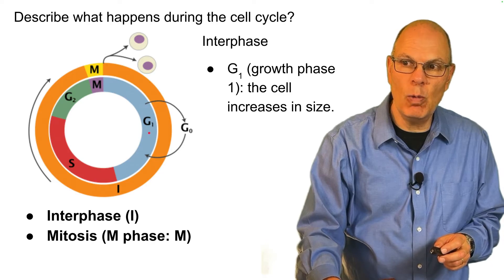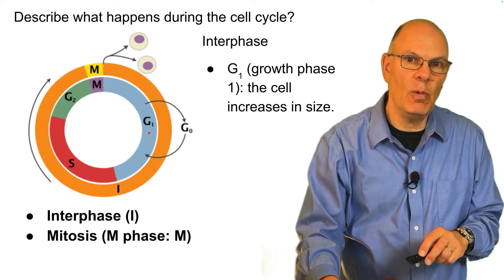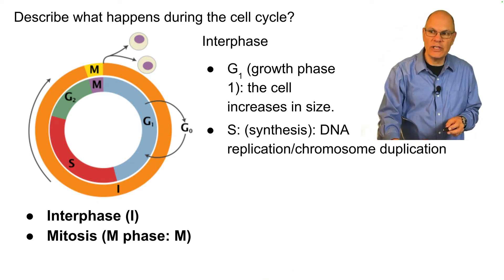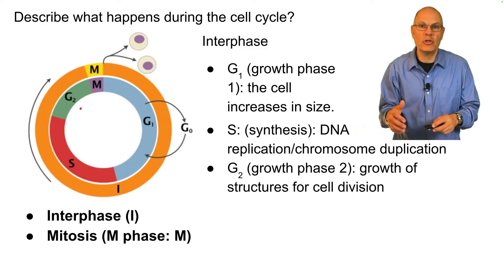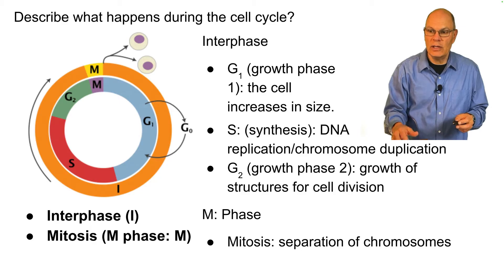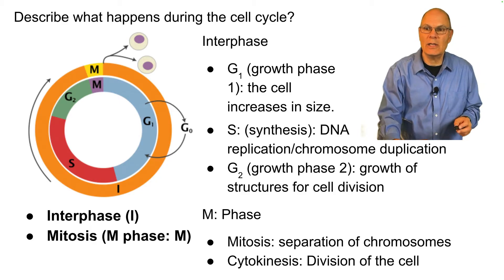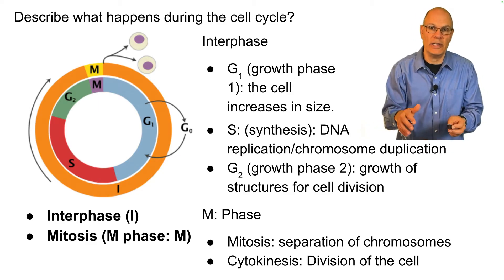The first is G1 — during G1, the cell increases in size. G1 stands for growth phase one. During S, which stands for synthesis, you have DNA replication or chromosome duplication. During G2, growth phase two, you have the growth of the structures that are required for cell division. During M-phase, you have mitosis — separation of the chromosomes — followed by cytokinesis. At the end, you have two daughter cells that are clones of the parent cell.